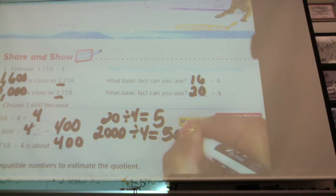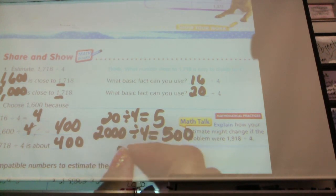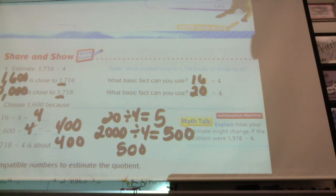Good, Anjali. 500. So it would be between 400 and 500. So we can do the between that way also.